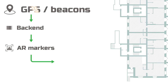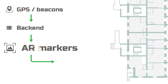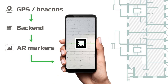First off, GPS or beacons provide approximate coordinates. Based on these coordinates, the app receives AR markers so as to determine the precise location of the user by scanning them. When the user selects or dictates the destination, the app builds and displays the route in augmented reality.